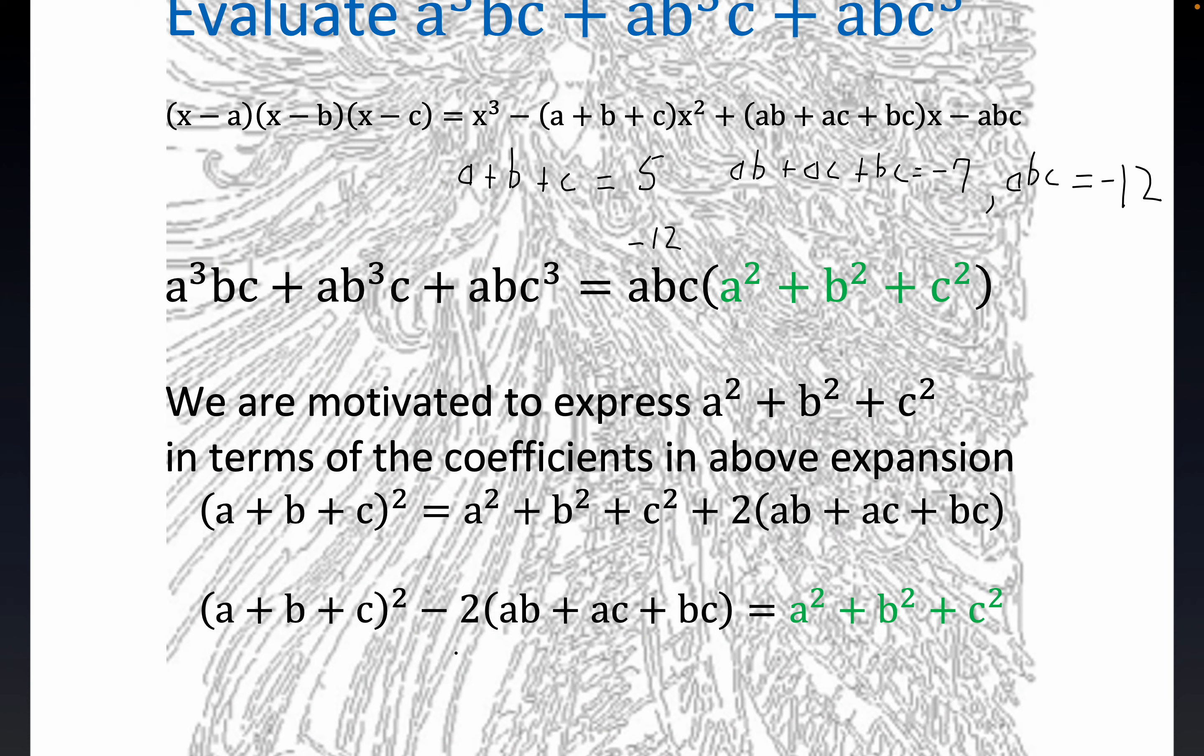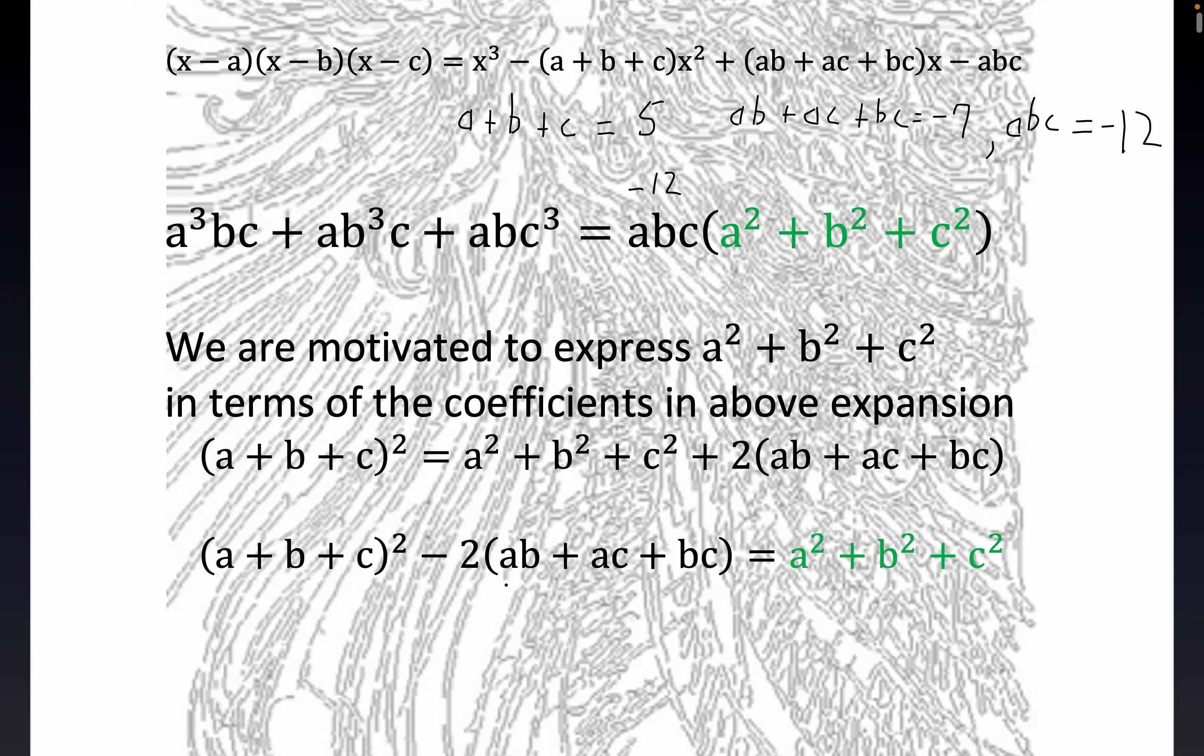We know that A plus B plus C is equal to five. And so, what we end up with is five squared right here. Minus two times whatever AB plus AC plus BC is. Now, we know what that is. That's equal to negative seven. So, we have negative seven right here. And this is equal to 25 plus 14. I'm getting 39. Double check me on that, but I'm pretty sure I did it right.